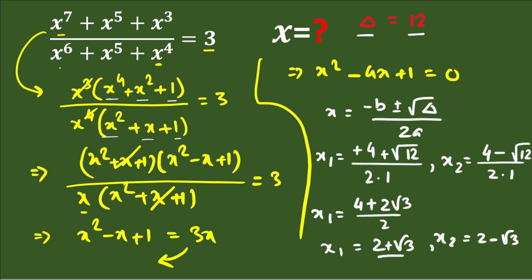So the two solutions to this problem are x = 2 + √3 and x = 2 − √3. If you found this video helpful, please leave a precious comment in the comment box and do not forget to subscribe to our channel. Thank you for watching the video.